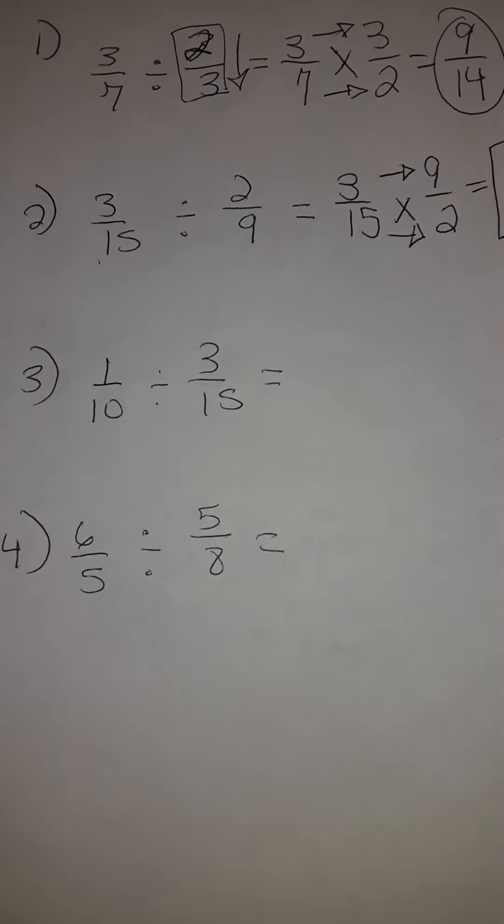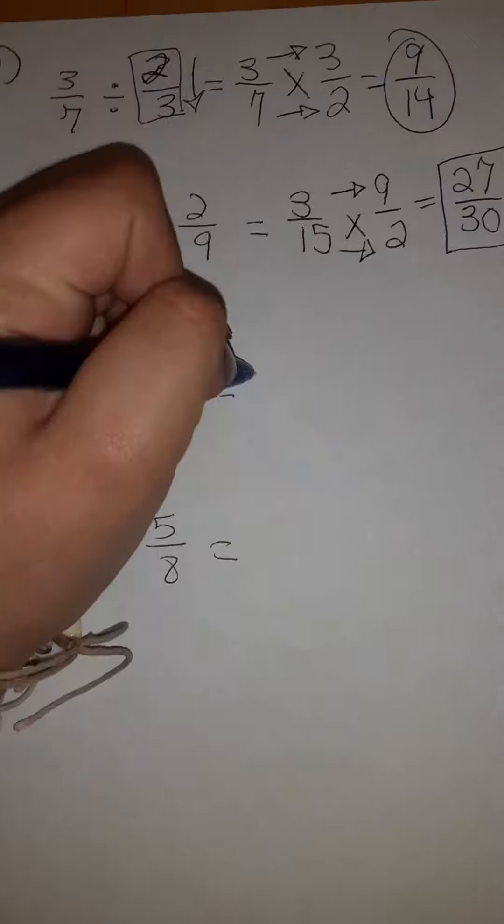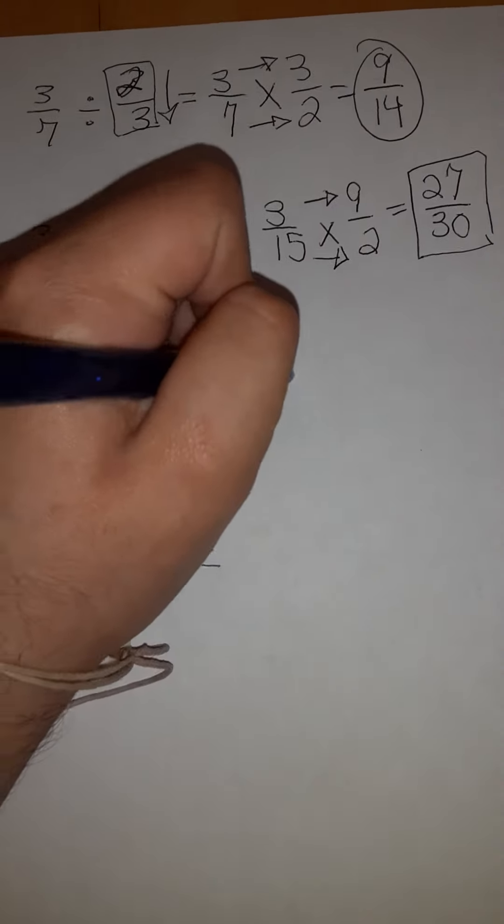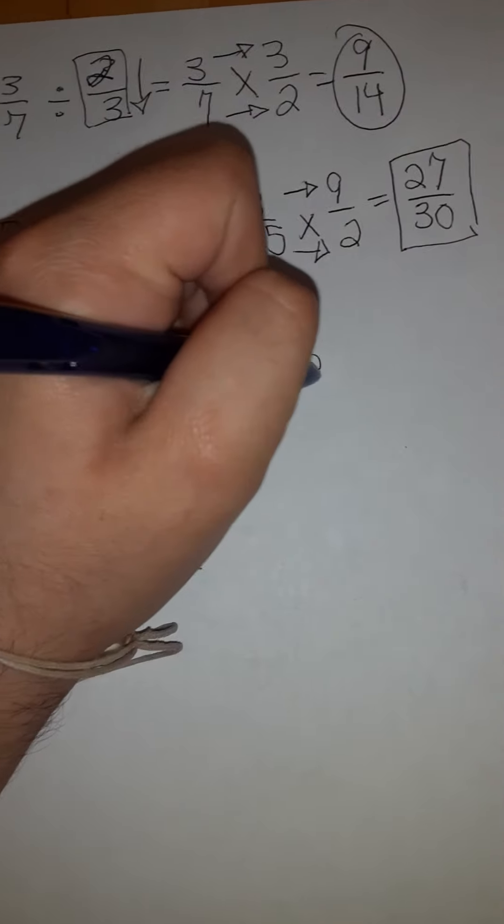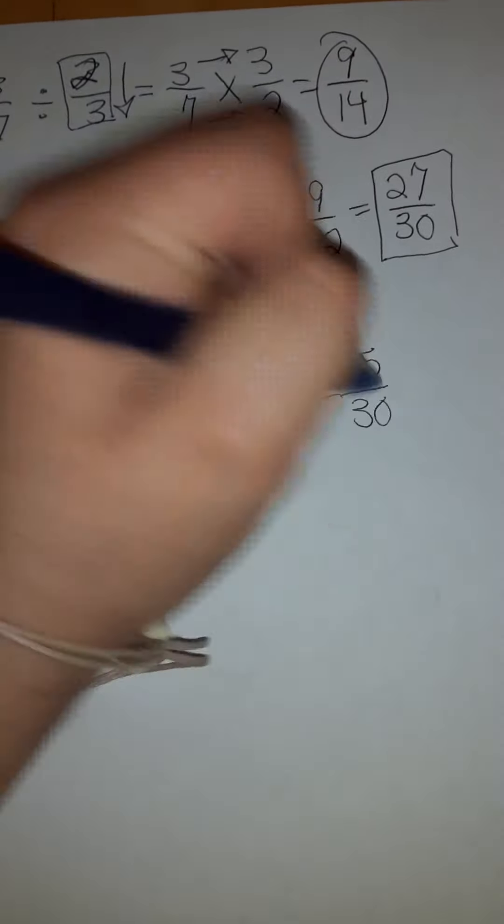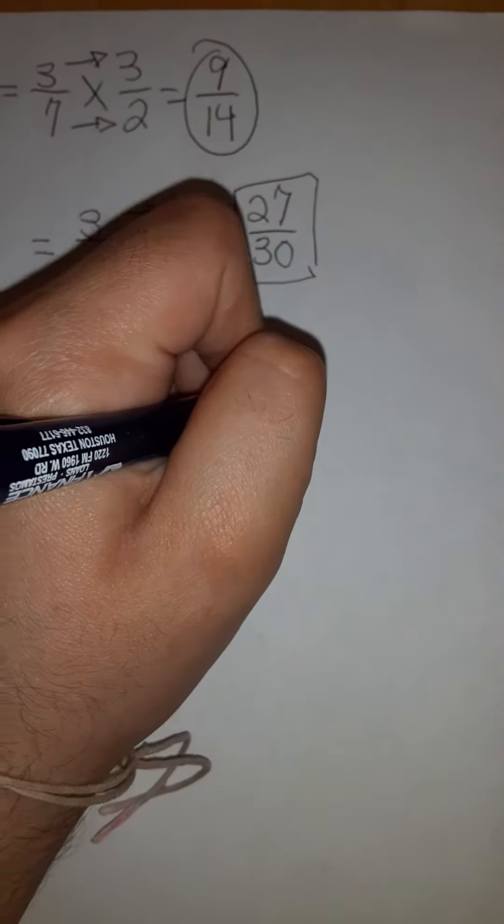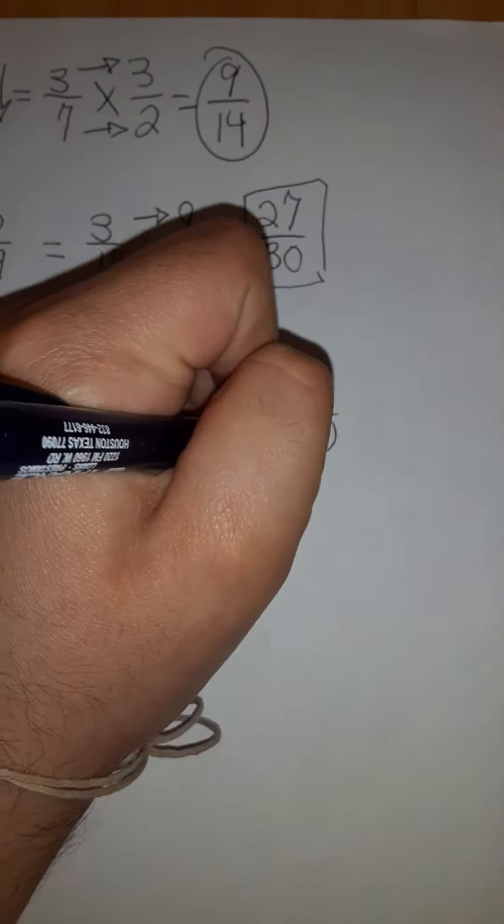Number 3. 1 over 10 divided by 3 over 15. 1 over 10 times 15 over 3. We get 15 over 30. We can reduce and it reduces to 1 half.